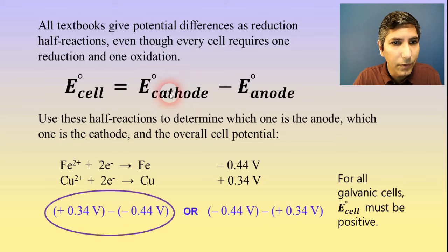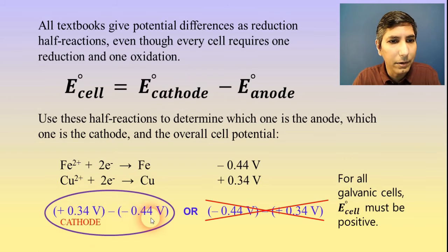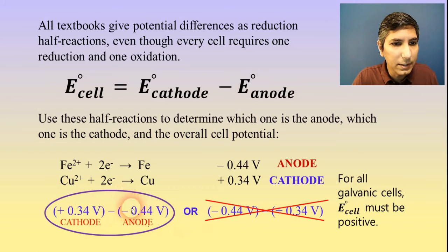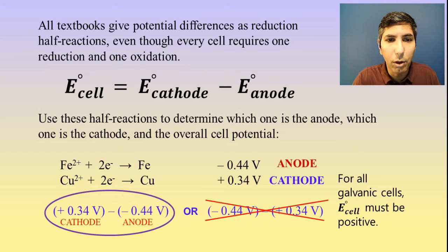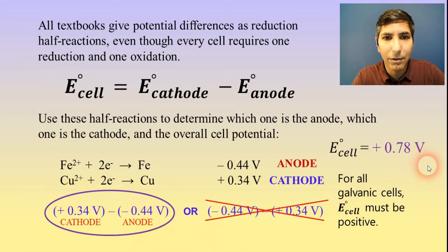The cathode is always in the first position, so that means copper has to be the cathode because it was placed in that first position, and iron has to be placed in the second position — that's the anode. So copper was the cathode and iron was the anode, because that subtraction gives us the positive voltage. The overall cell potential is 0.34 volts plus 0.44 volts, which gets us 0.78 volts.